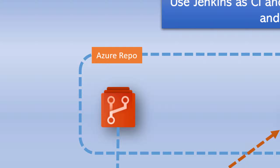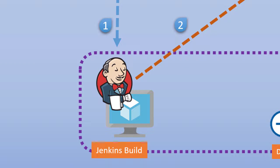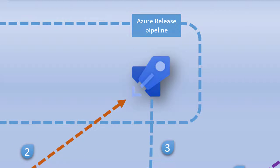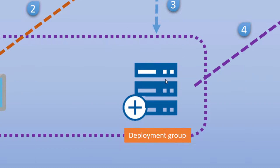The Azure Repo will be consumed within Jenkins, which is installed in one of your environments. Jenkins is what consumes the repository where your source code is sitting, builds it, and creates an artifact. Once the artifact is created, it is pushed into the Azure build pipeline. This then automatically triggers the Azure release pipeline, which deploys your application to specified machines using deployment groups.